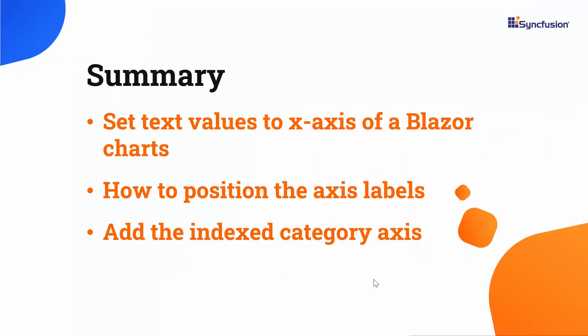Let's summarize the main points of this video. We have seen how to categorize the X axis of a Blazor chart by customizing its value type, how to position the labels on the ticks or between the ticks, and finally how to add the indexed category axis. If you would like to see a working example of the charts in this video, you can download it from the GitHub link in the description below. I have also provided a link in the description where you can see if you qualify for a free license key to use our Blazor products through our community license. If you found this video useful, don't forget to click the like button and subscribe to our channel to watch more videos like this.